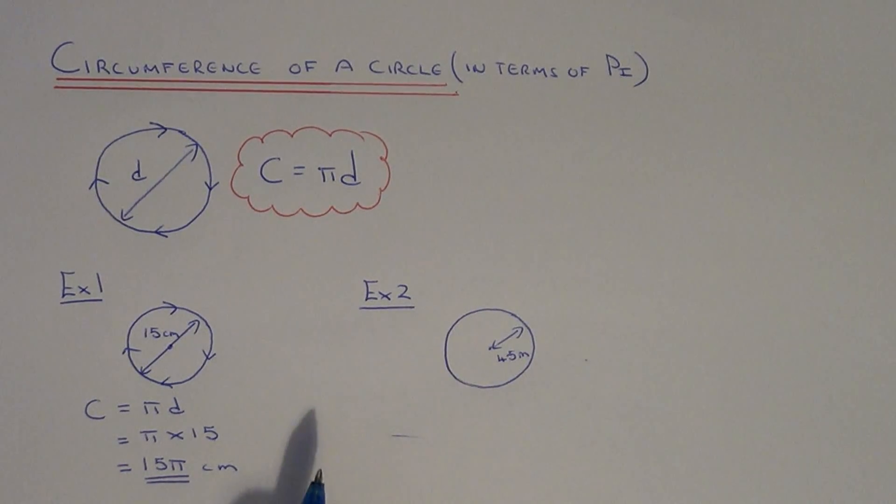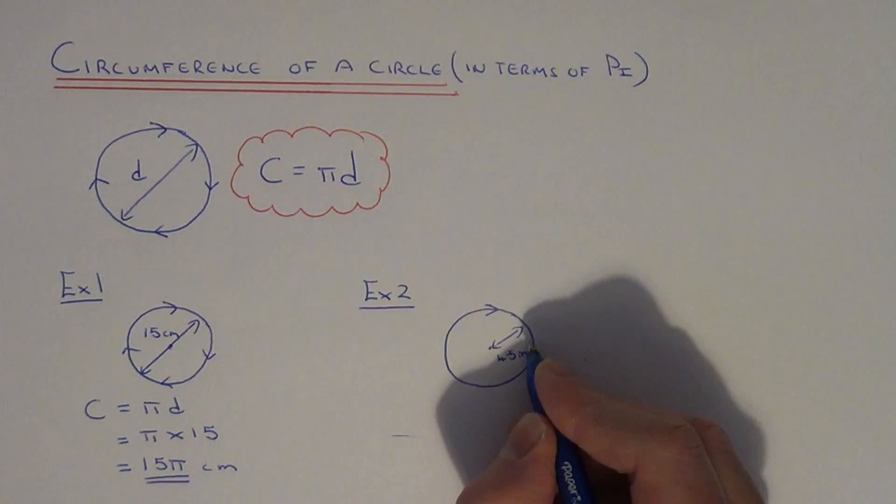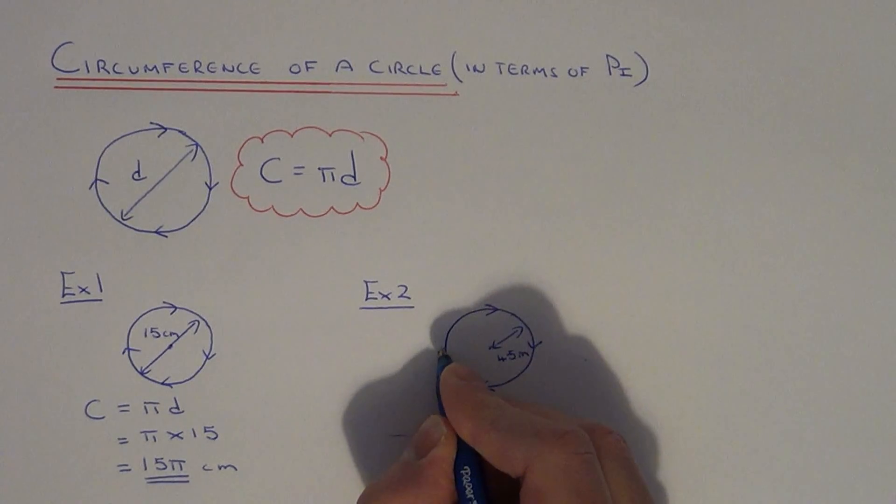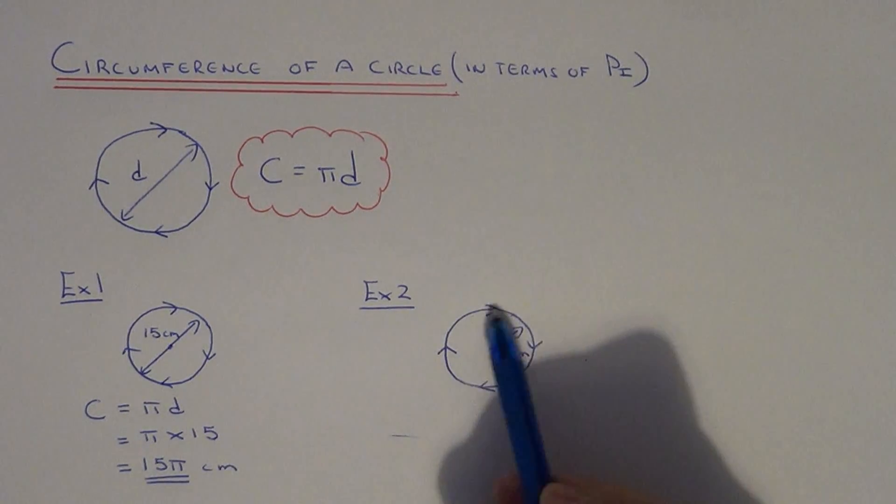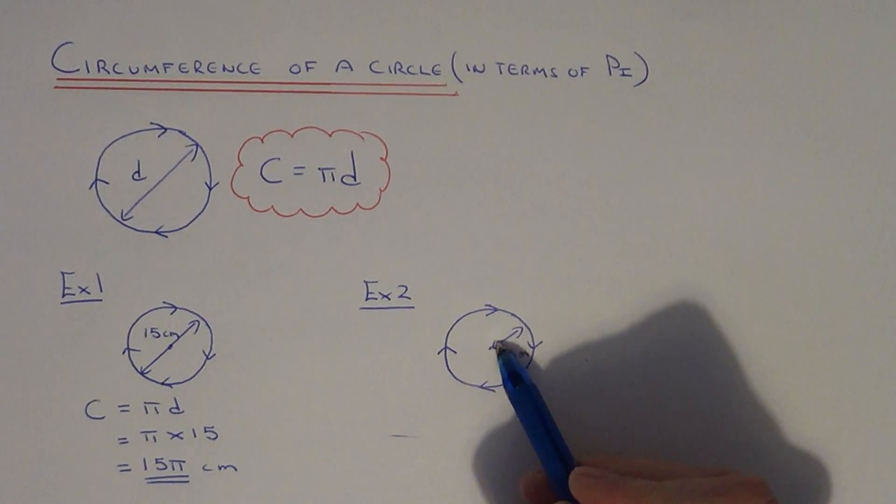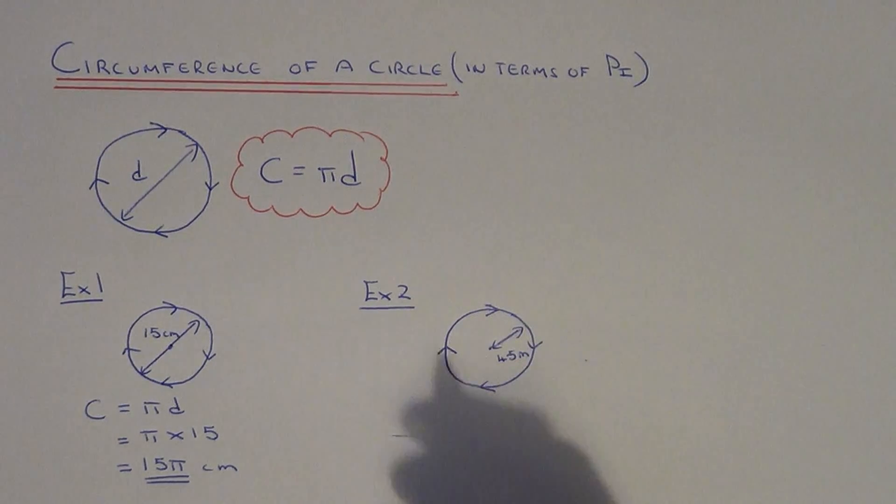Let's move on to example two. Again, we've got to work out the circumference as an exact answer. This time we've got a circle, and the radius is 4.5 metres.